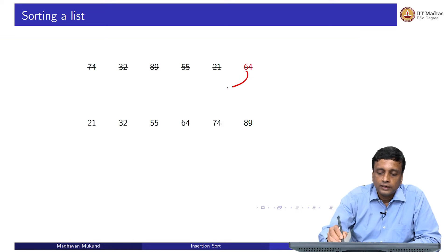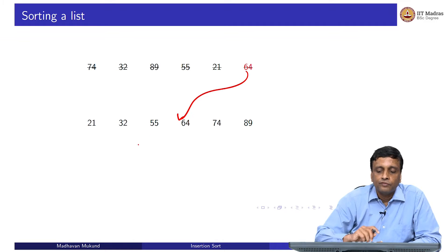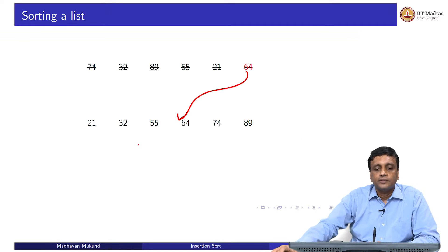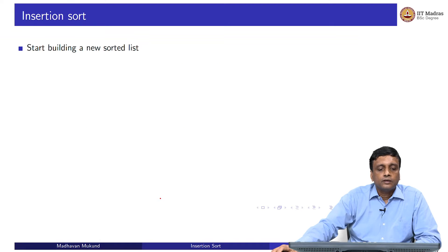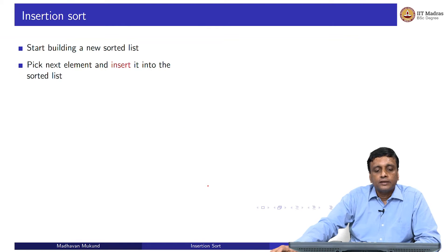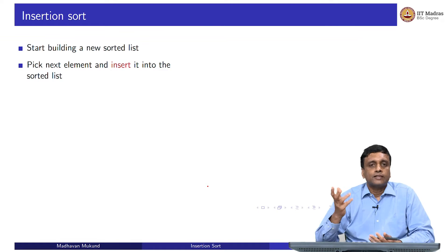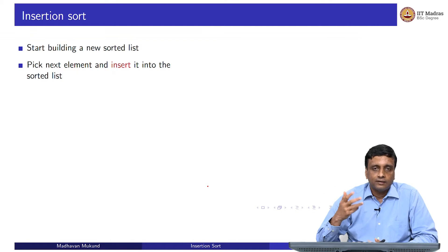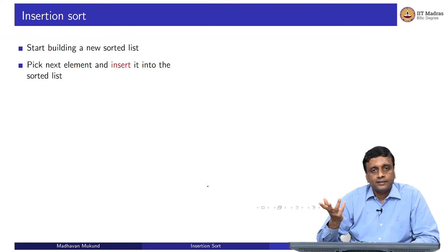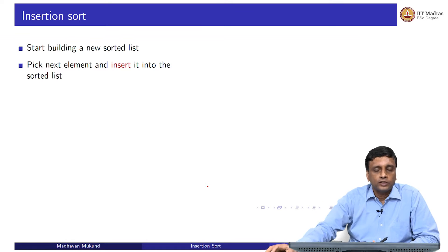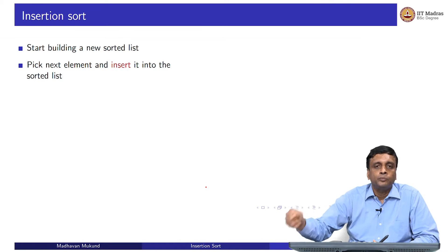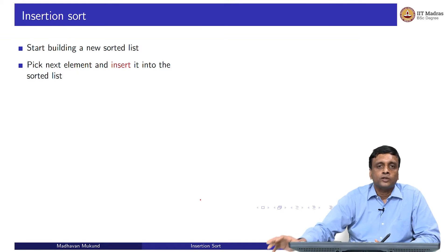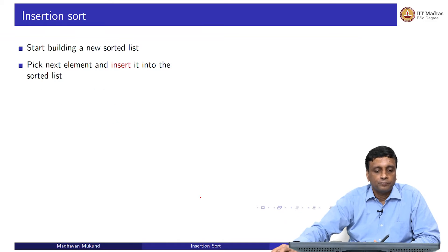64 came and inserted itself between 55 and 74 — hence, insertion sort. In insertion sort, you build a new list, pick the next element, and insert it into this list. Initially you build a list of size one, which is sorted by the fact that it has only one element — every one-element list is by definition sorted. Once you have two elements by insertion, you make sure the two-element list is sorted, then the three-element list is sorted, and so on.